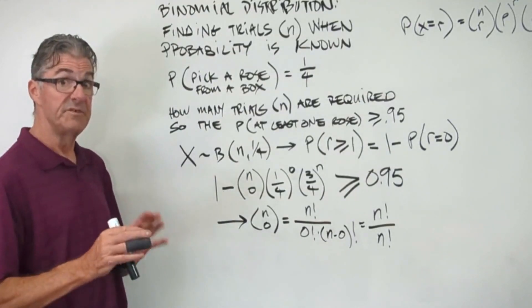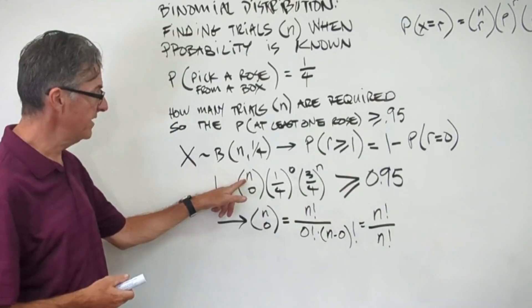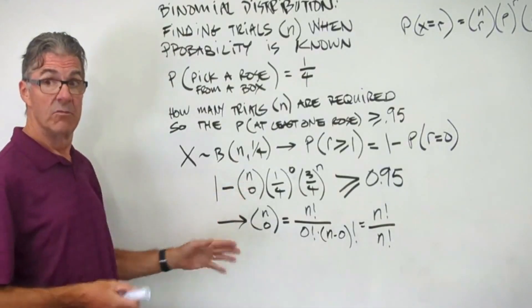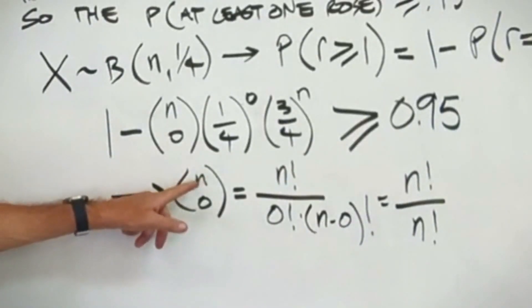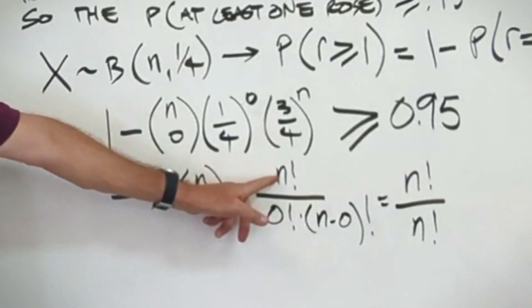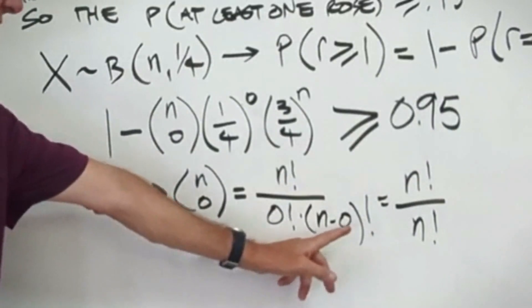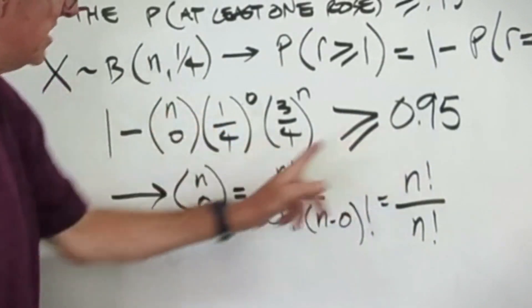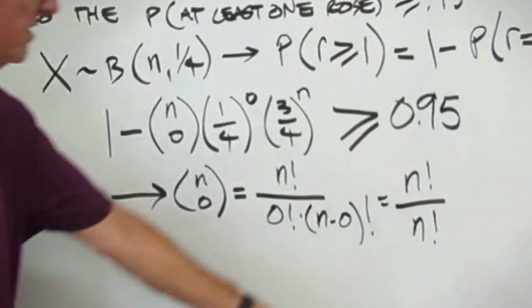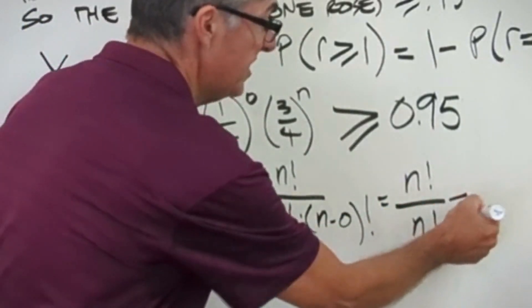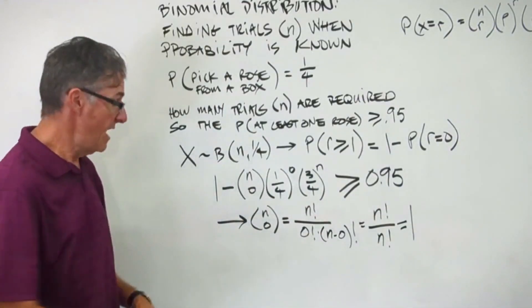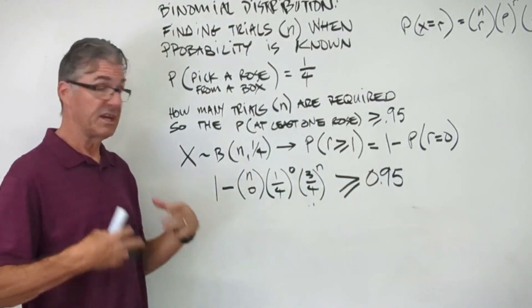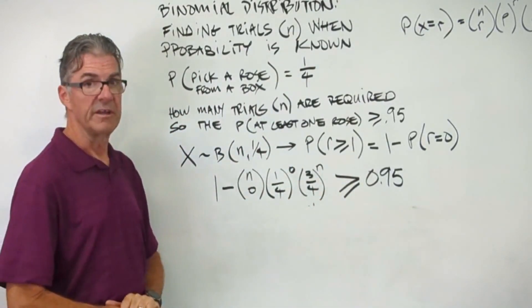I broke this out into a little sub-step to remind you of how to evaluate something when there's a zero at the bottom. Just looking at the combinatorics n choose zero, we do n factorial over zero factorial times n minus zero factorial. Remember, zero factorial is one. So we have n factorial on the top. N minus zero is just n, so we have n factorial on the bottom. That gives us one. Go ahead and pause the video and finish the calculation step for this inequality.